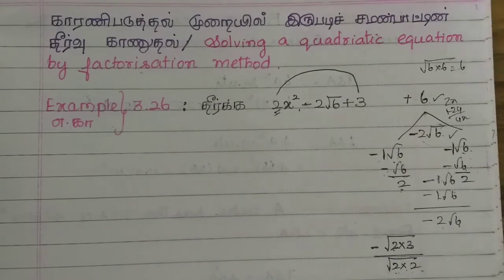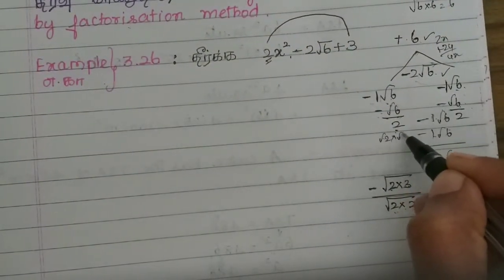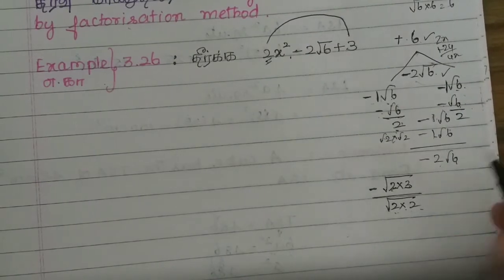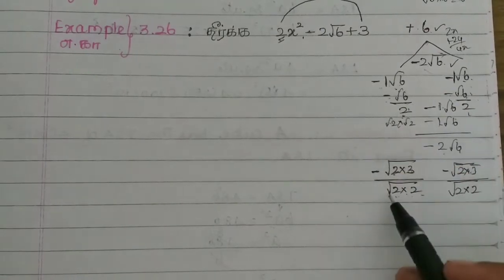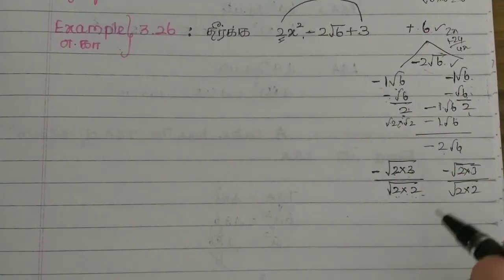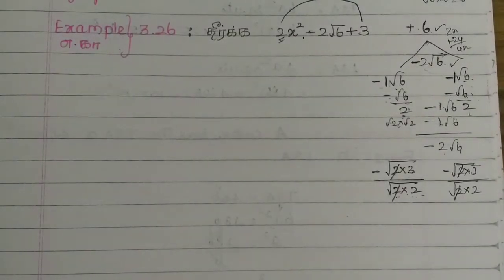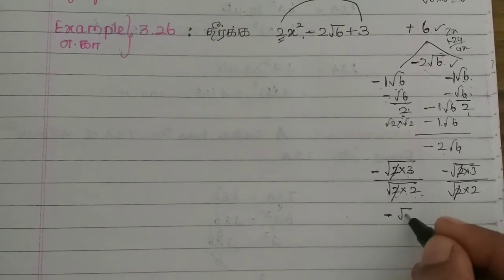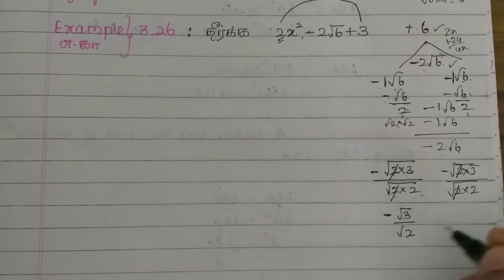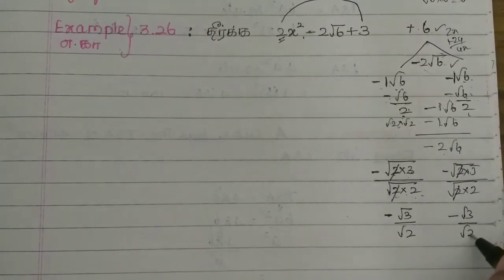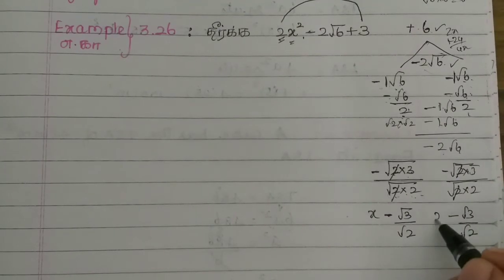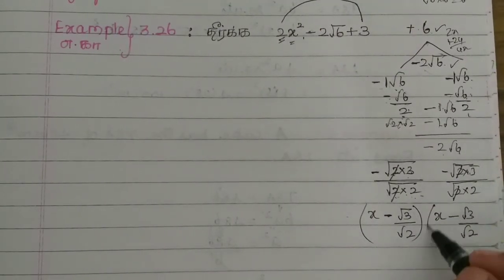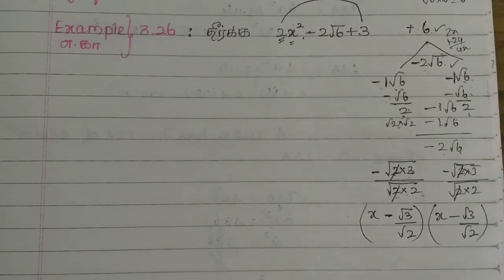We need to do root 2 into root 2 — that means root 2 into root 2. The same amount means root 6. We need to cancel. Now we can cancel this 2 and we can cancel this 2. So what is it? Minus root 3 by root 2. Here it is, minus root 3 by root 2. Let's get the variable here, so we can get x to the variable.